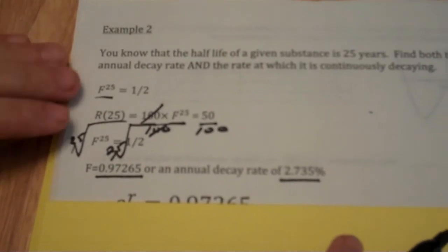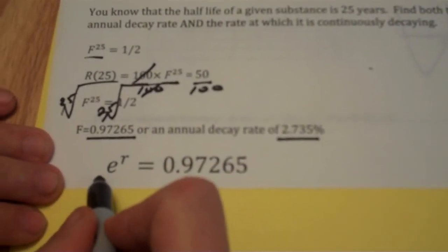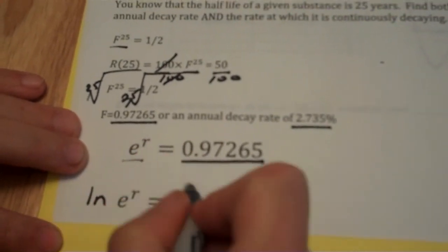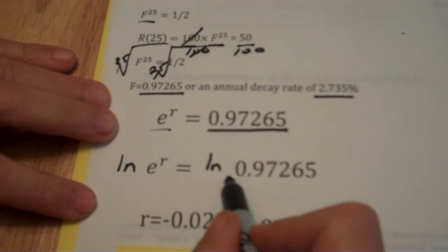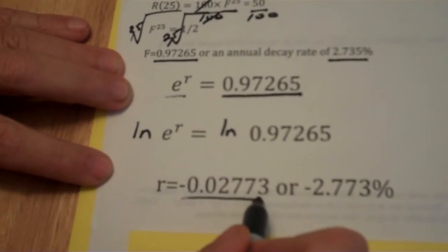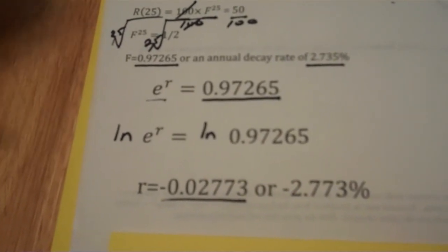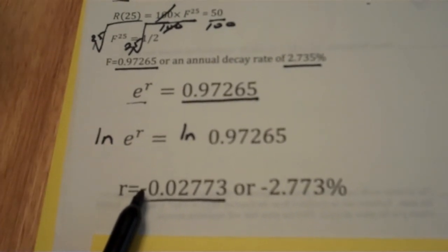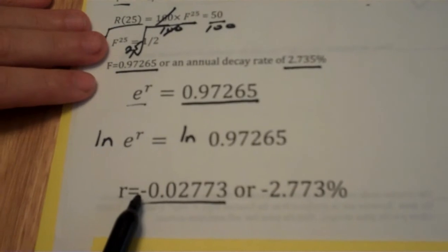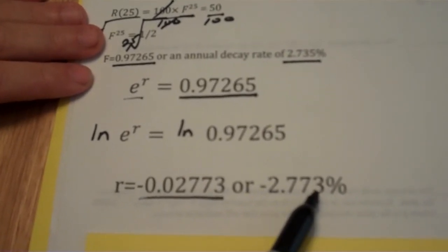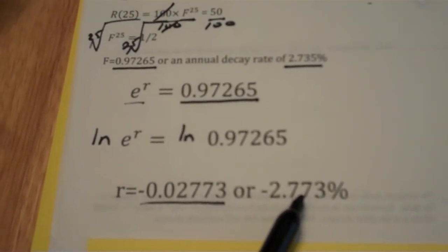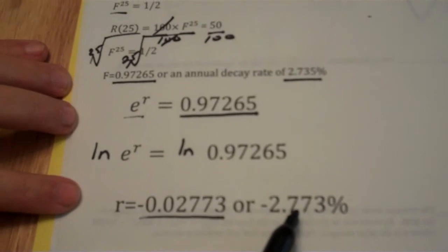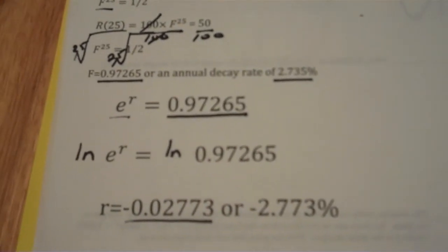Let's talk about continuous decay. That e to that power must equal your decay factor. To solve this, I'll take the natural log of both sides. The natural log of 0.97265 equals this percentage. One of the advantages to using continuous decay problems is it's much simpler to do these calculations. I want you to notice it just comes out as negative, which tells me right away it's a decay rate. In this case, it's decaying at a rate of 2.773%. The continuous decay rate is different than the yearly decay rate because of the compounding.